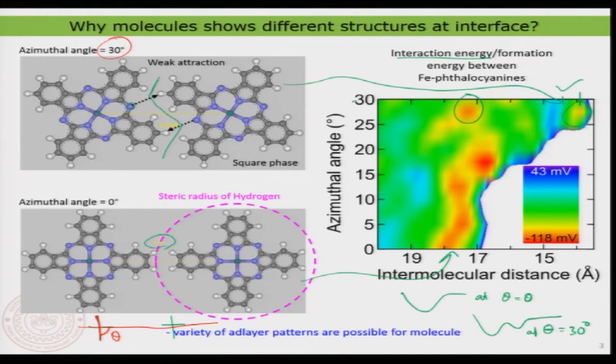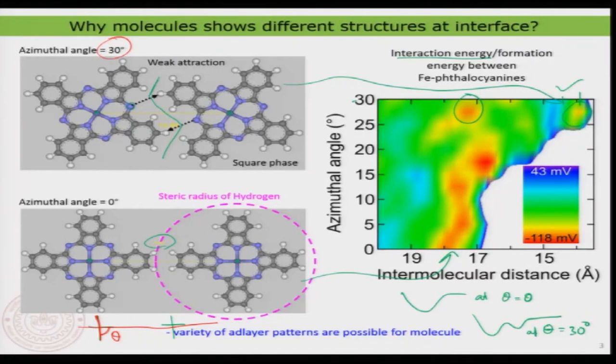Depending on the shape and geometry of the molecule, you can end up with much more complex diagrams. It may not be possible to define everything in two coordinates — you may require more than two coordinates to define the intermolecular interaction. In this case, two coordinates are sufficient. You will also see in later slides that the molecular pattern on the surface corresponds to the 30-degree orientation, and you need many molecules to push them into the global minimum, because there are many minima available on the potential energy surface.